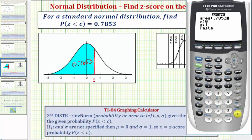Because we're looking for a z-score, we're letting mu equal zero and sigma equal one, so we press enter down to paste.